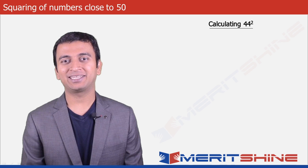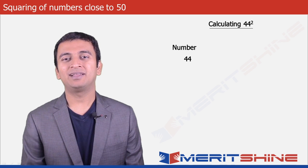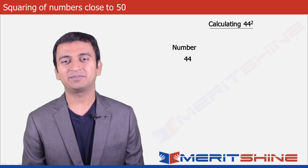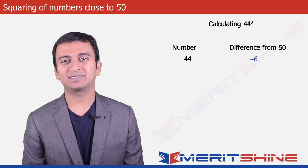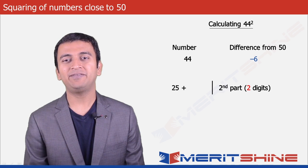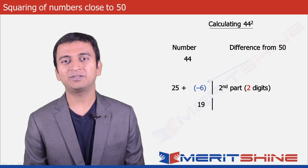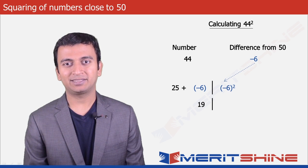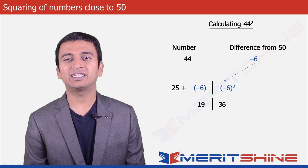Let us take 44 as an example now. The difference is 44 minus 50 which would be minus 6. The first part would be 25 plus minus 6 giving us 19, and the second part would be the square of the difference, which is minus 6 squared, giving us 36. Clubbing these two we will get our final answer as 1936.